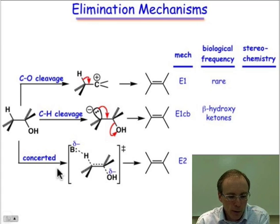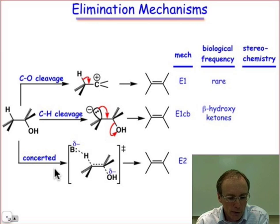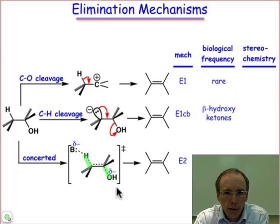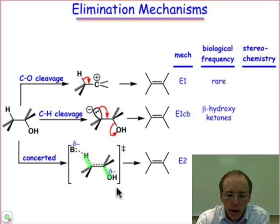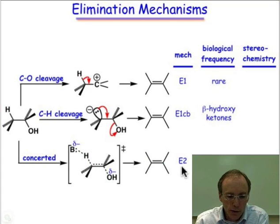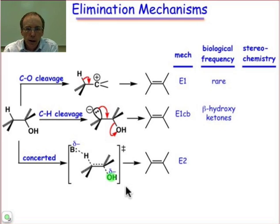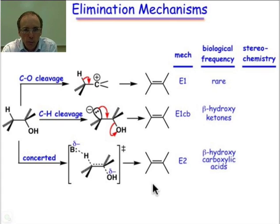The last of the three pathways is the concerted E2 pathway. In this case what happens is the simultaneous bond breaking of both the carbon-hydrogen and the carbon-oxygen bonds, and simultaneous bond making of the π bond. The E2 reaction pathway is also found in biological systems, either as the conversion of the hydroxide group to the phosphate, which is a better leaving group, or it is sometimes found with β-hydroxycarboxylic acids.